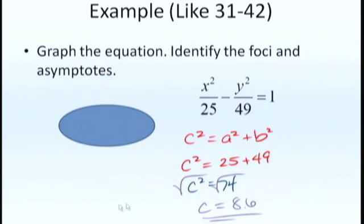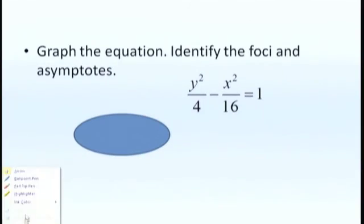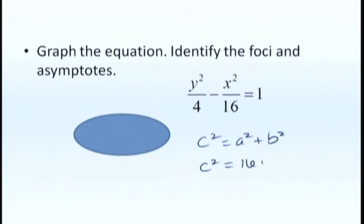Now let's look at another one. This time y is first, so it's going to be a little bit different. But if I still find c for my foci, I'll get c squared is 16 plus 4, which gives me c squared is 20. Take the square root and I get c is about 4.5.